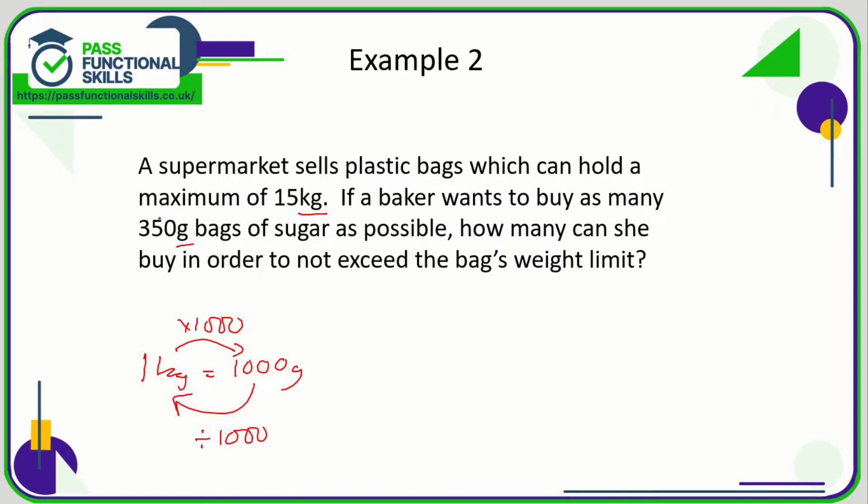Multiplying by 1000 is really easy—you're just sticking on three zeros when it's a whole number, whereas if we divide 350 by a thousand we're going to get a decimal answer which is not going to be very nice. So 15 times 1000 is 15,000 grams.